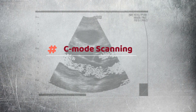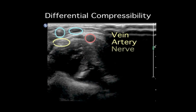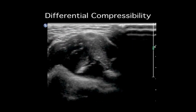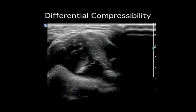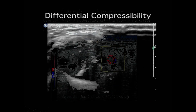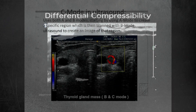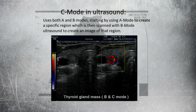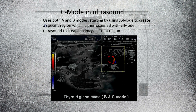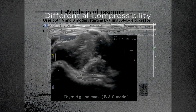A C Mode image is formed in a plane normal to a B Mode image. A gate that selects data from a specific depth from an A Mode line is used. Then the transducer is moved in the 2D plane to sample the entire region at this fixed depth.